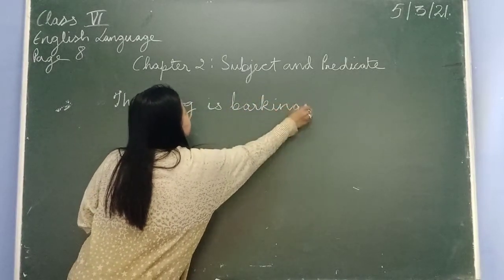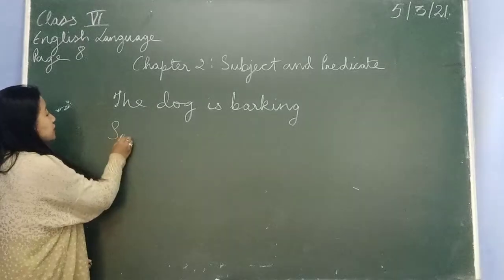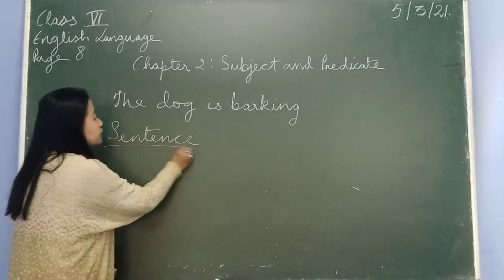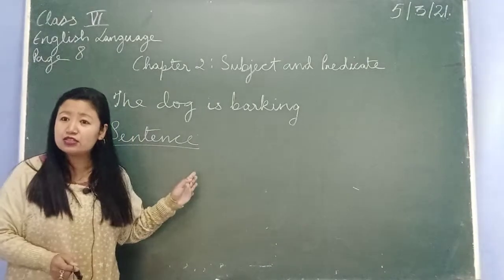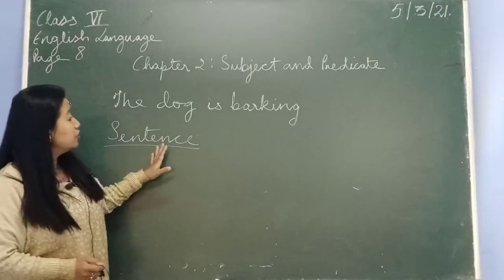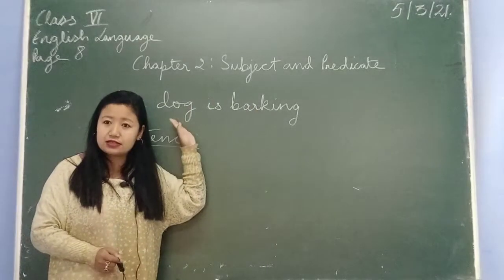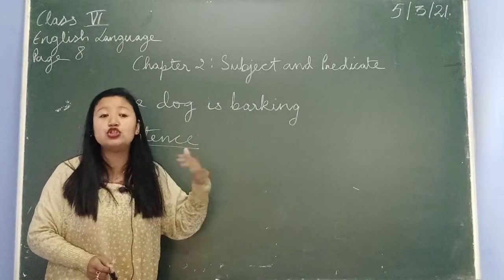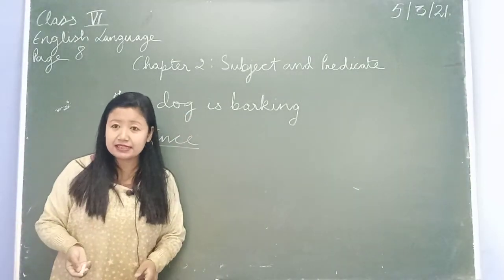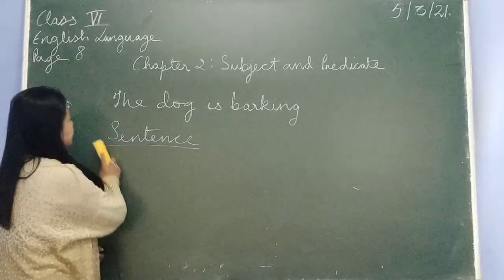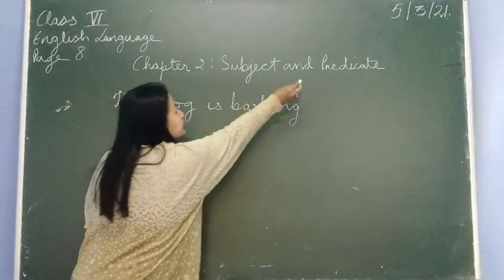Now look at this sentence — is it a proper sentence? Remember in Chapter 1 we spoke about a sentence. We learned about the definition of a sentence and we also learned about the kinds of sentences. What is the definition of a sentence? In simple words, it is a group of words which makes sense, which you can understand. So when I say 'the dog is barking,' is it a complete sentence? Yes, it is a complete sentence.